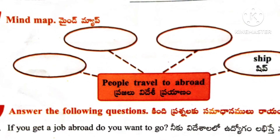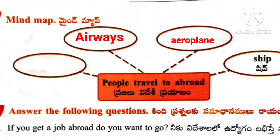Roman number 2: Mind Map. People travel abroad. Here given: Ship, Aeroplane, Airways, Waterways.